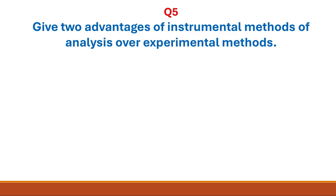Question 5: give two advantages of instrumental methods of analysis over experimental methods. There are three main advantages of instrumental analysis. The first is that it is faster, the second is that it is more accurate, and the third is that it is more sensitive.